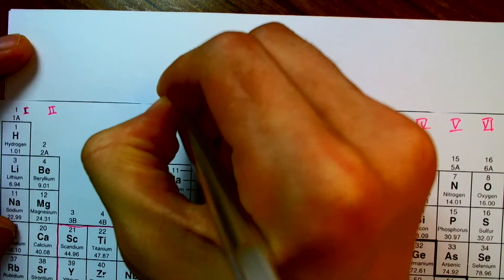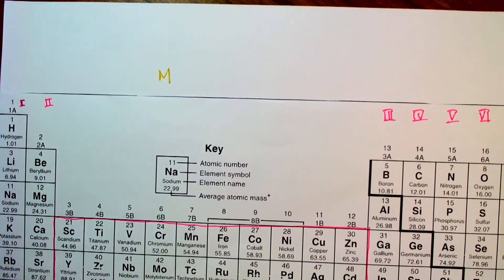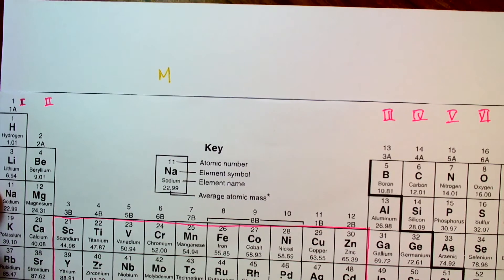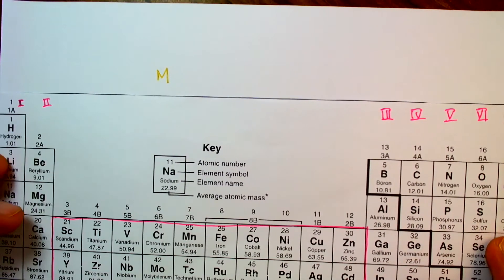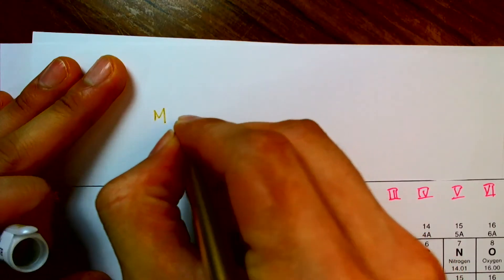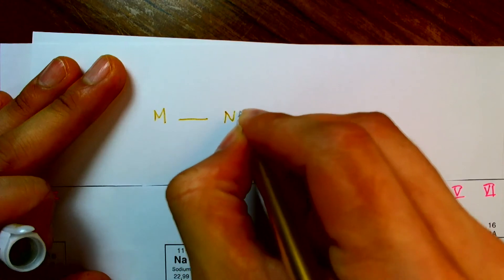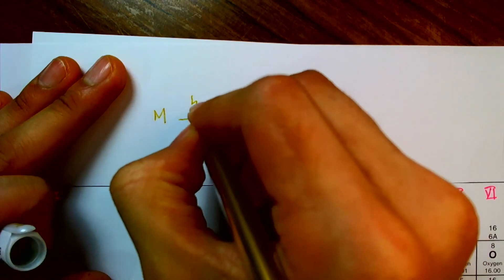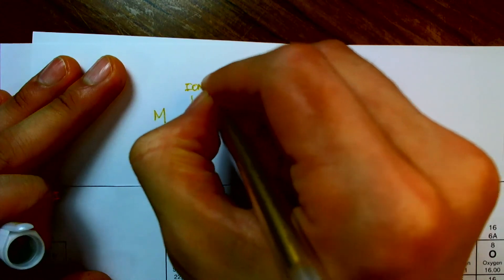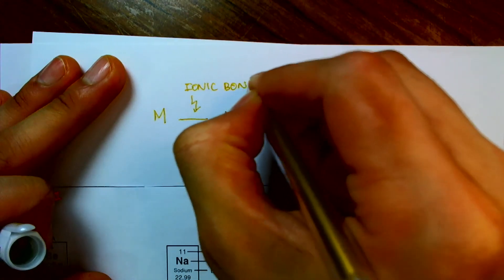So I'll call that M. And we took a look at how we could take elements from this side of the periodic table and combine them with elements on the non-metal side of the periodic table. So we had bonding between a metal and a non-metal, and we called that bonding an ionic bonding.